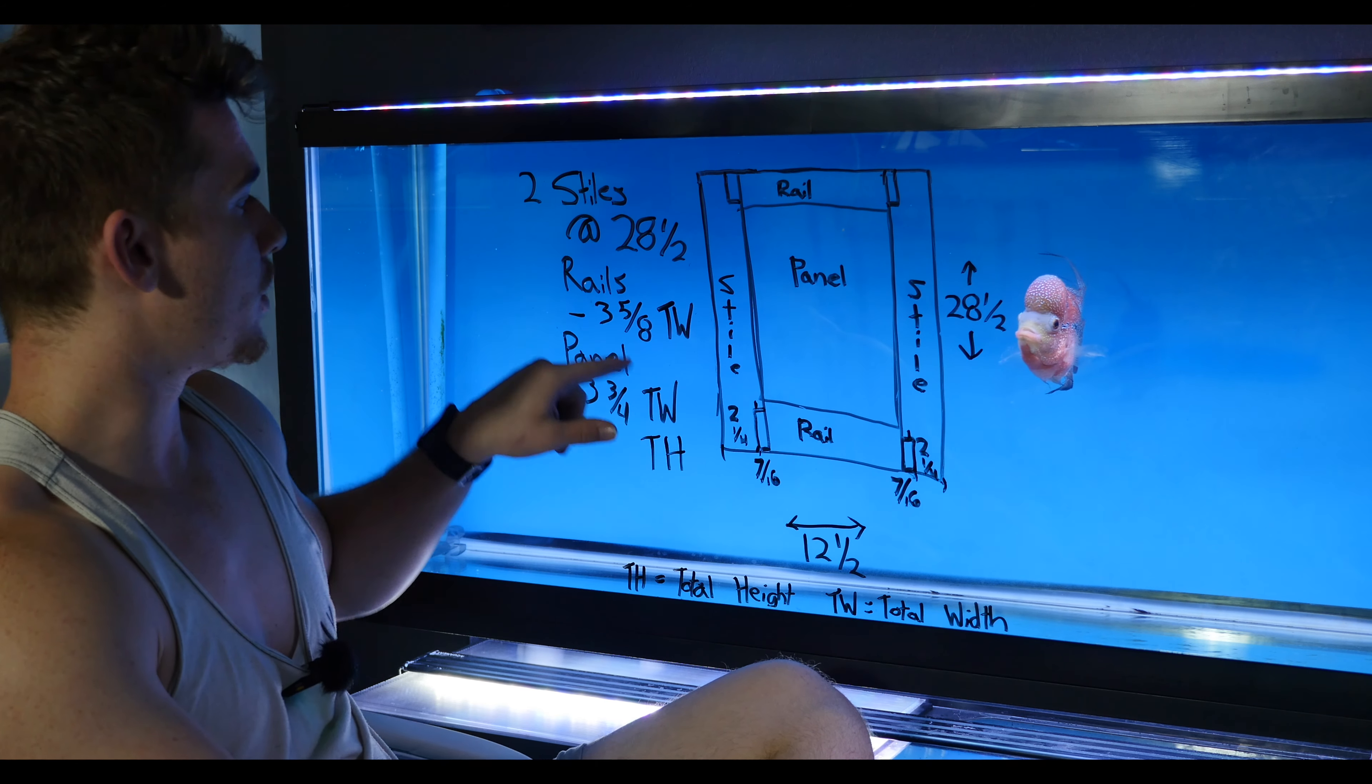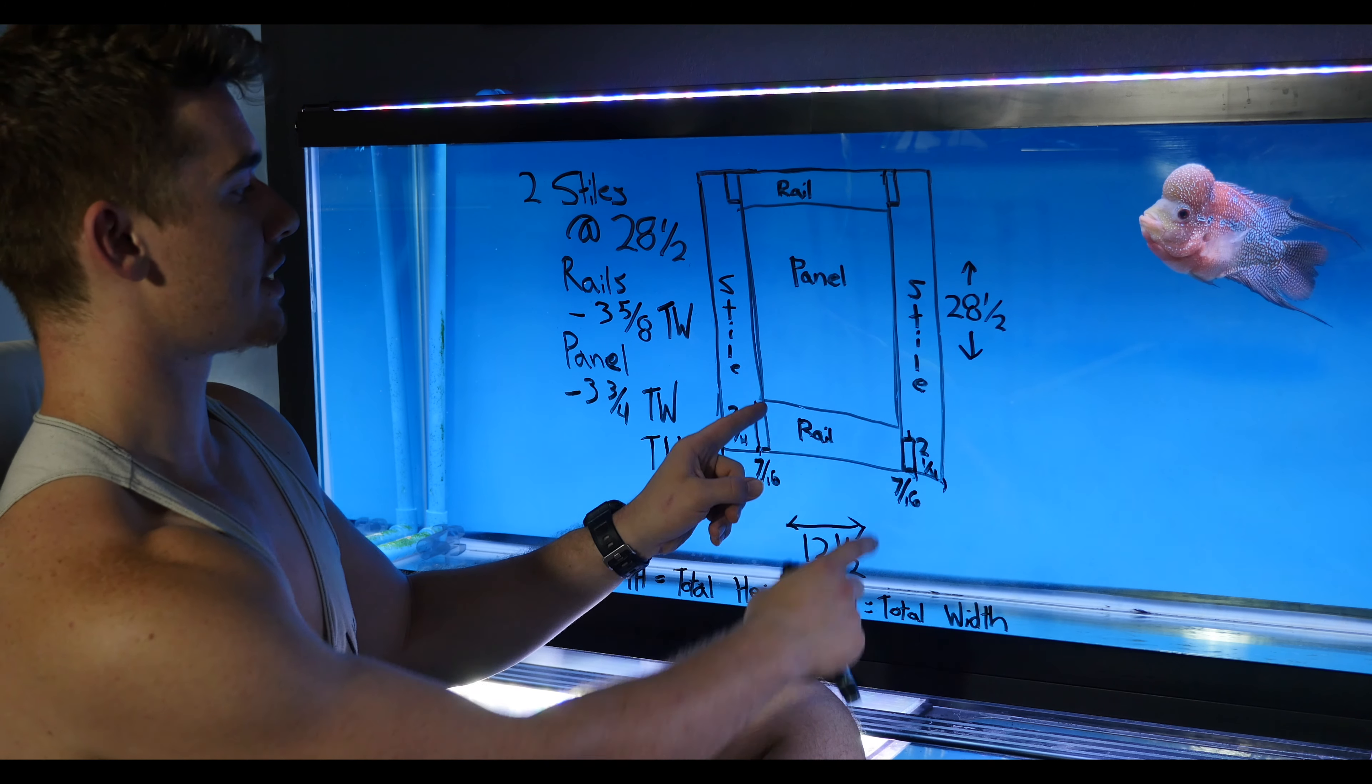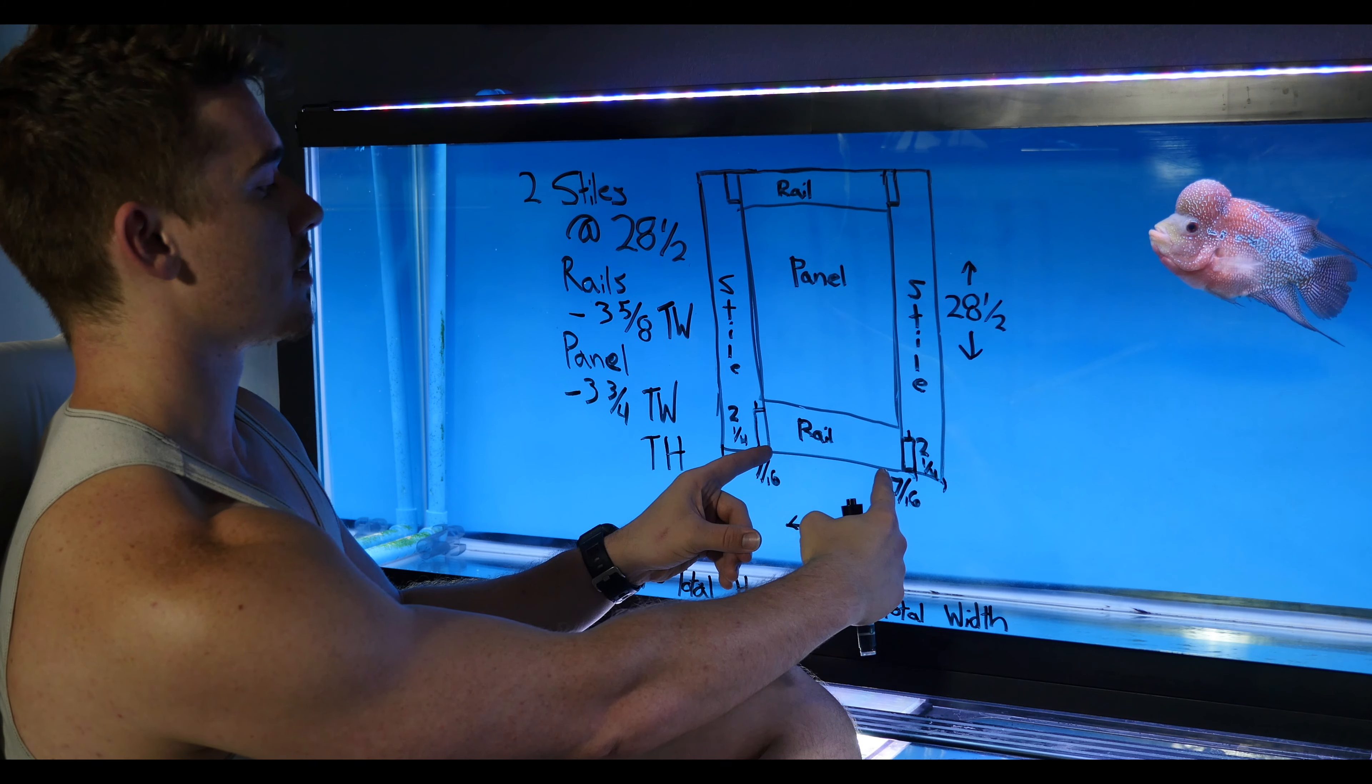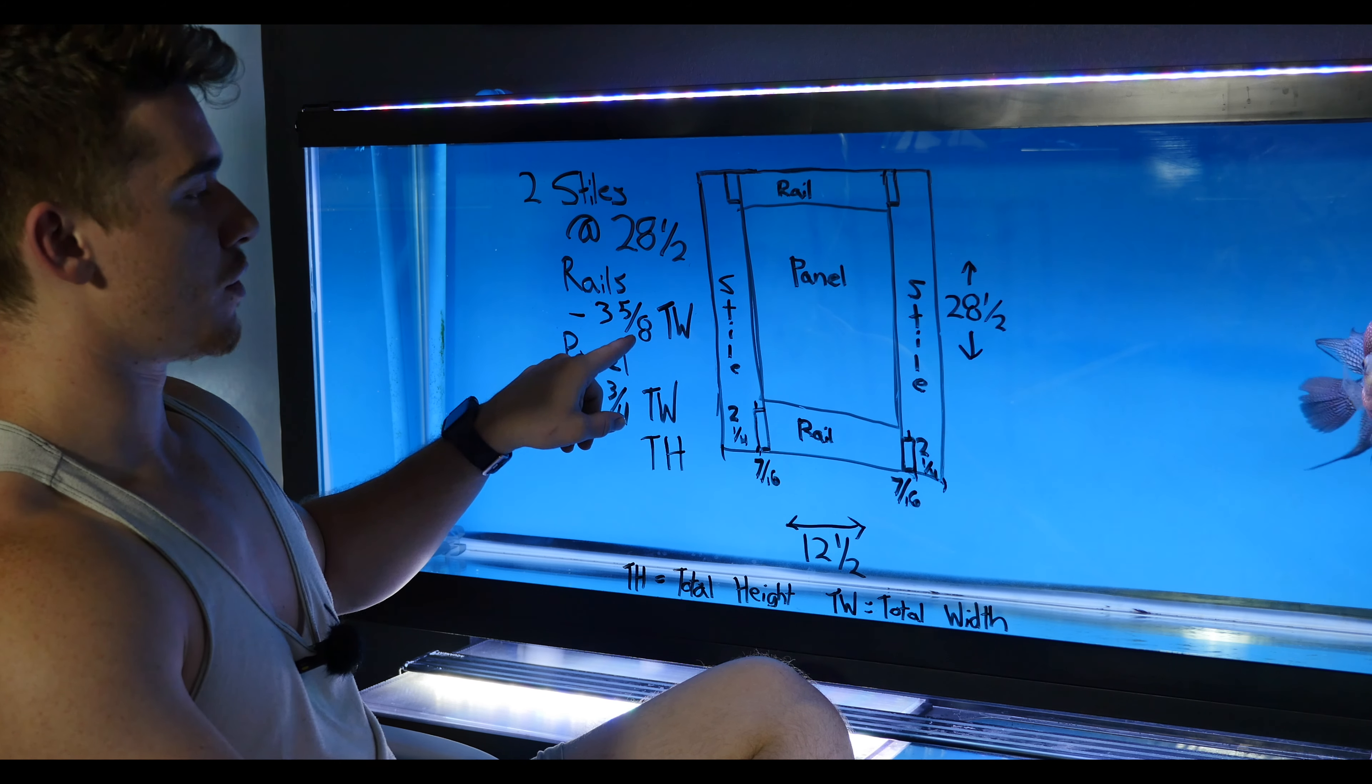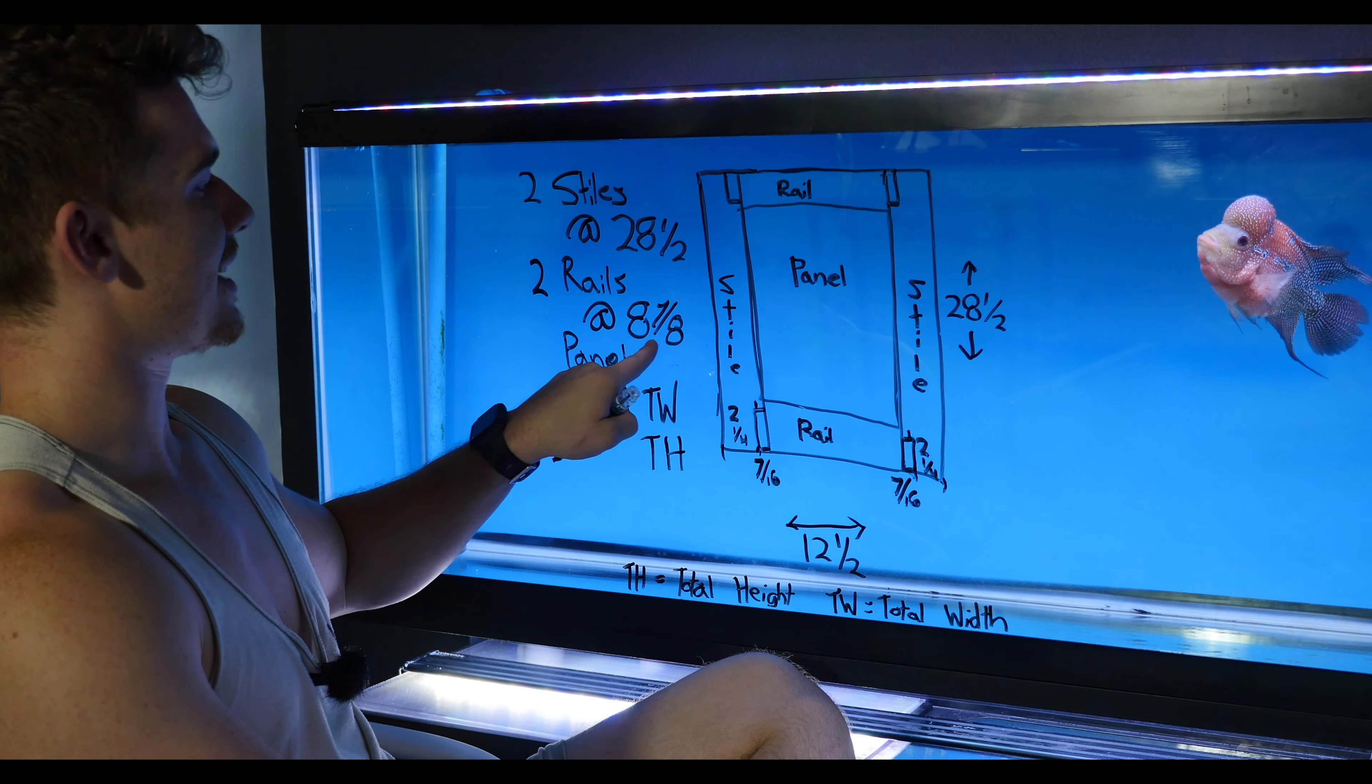To save ourselves that math, we already know that we're just going to subtract three and five-eighths from the total width of the door, and that will give us the edge to edge of the tongues, not just the inside to inside of the styles, because if we subtracted four and a half, that would give us inside to inside of the styles, but we want to only subtract three and five-eighths to give us that seven-eighths that will go inside of the styles for our joinery. So for our rails, we're going to subtract three and five-eighths from the total width. So for this door, that's twelve and a half minus three and five-eighths, which comes out to eight and seven-eighths. So we'll need two rails at eight and seven-eighths.